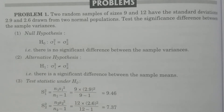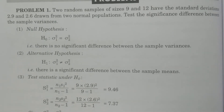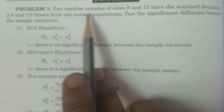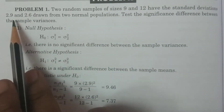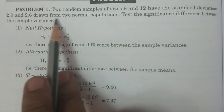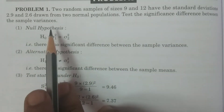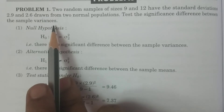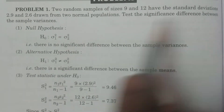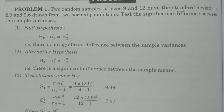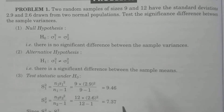This is also a small sample test. The problem states: two random samples of sizes 9 and 12 have the standard deviations 2.9 and 2.6, drawn from two normal populations. We need to test the significance difference between the sample variances.